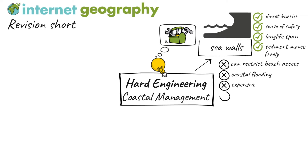Finally, there are a series of environmental impacts associated with sea walls. Recurved sea walls can increase the erosion of beach material. They don't look attractive and destroy cliff habitats. Also, they reduce the input of sediments to the coastal system as cliffs are protected.